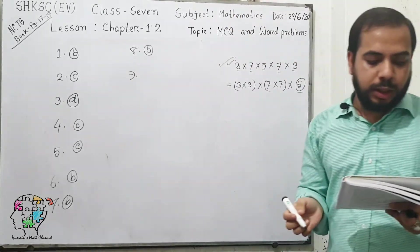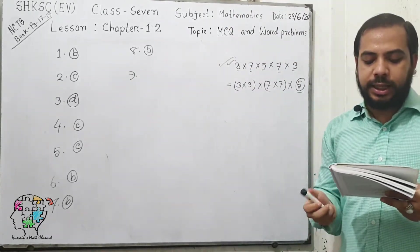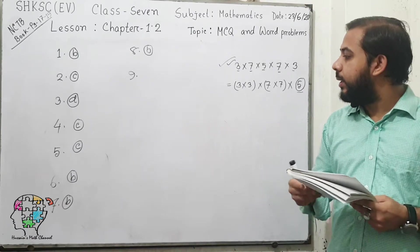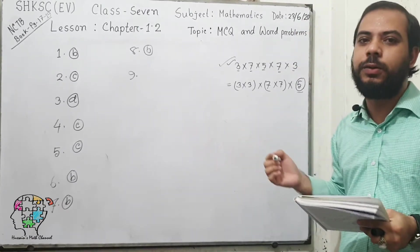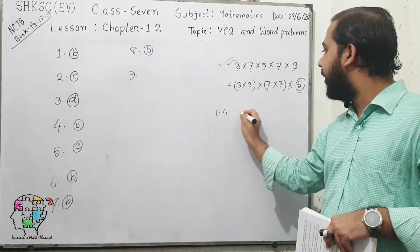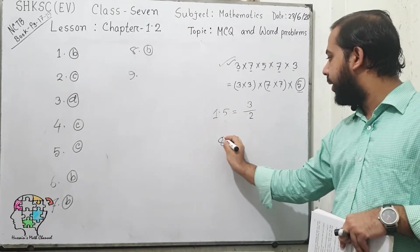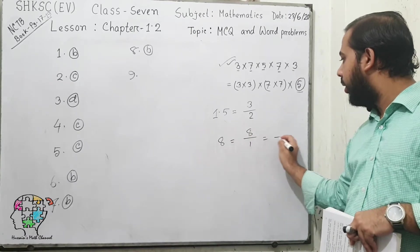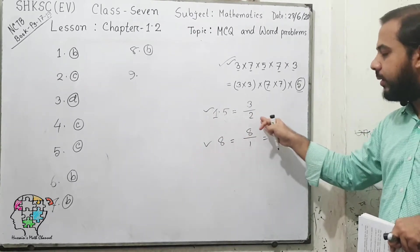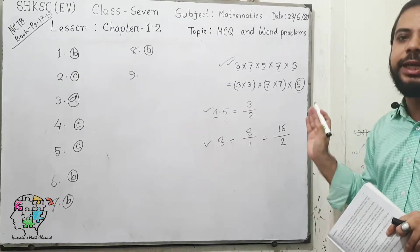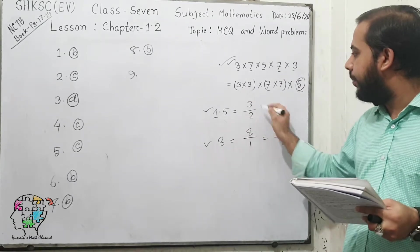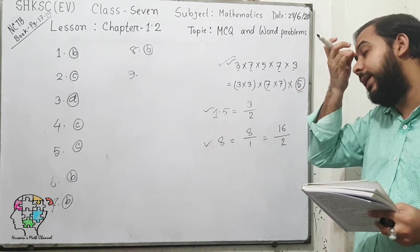Question number 9: which one of the following is an irrational number? If a number cannot be written as a ratio, it is called an irrational number. For example, 1.5 can be written as 3 by 2, and 8 can be written as 8 by 1. So any number that can be written as a fraction of two integers is a rational number. If there is no such fraction representation, then it is an irrational number.